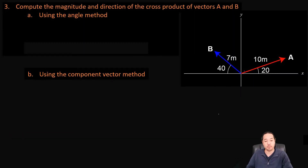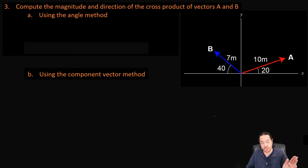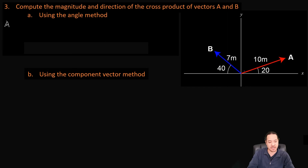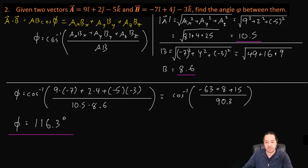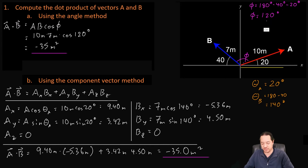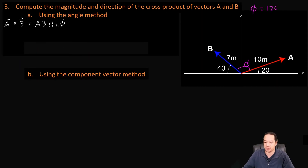Now question three: we want to compute the magnitude and direction of the cross product of vectors A and B. We're going to use the angle method first, then the component vector method — the same vectors we used with the dot product. The equation for the angle method is A cross B equals AB sine of phi. We already know phi is 120 degrees since these are the same vectors.